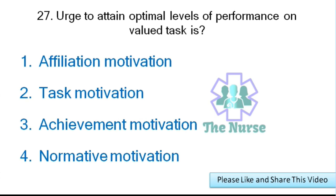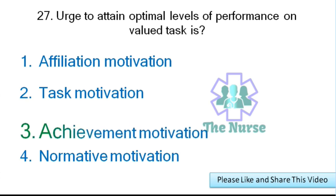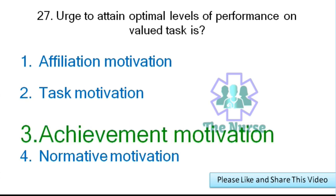Next question: The urge to attain optimal levels of performance on a valued task is called what? Options: affiliation motivation, task motivation, achievement motivation, or normative motivation. Correct answer: achievement motivation.